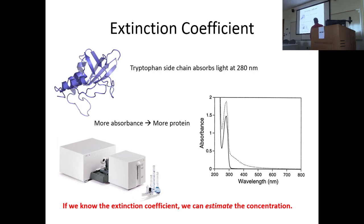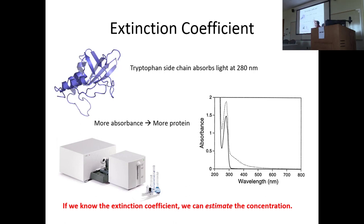Caveat emptor: if you don't have a pure protein, you're not going to get an accurate concentration. Similarly, if you have another large chromophore — like dyes or hemoglobin with its heme signal — and there are other things contributing to absorbance at this peak, that's not going to give you an accurate concentration either. A good UV-Vis spectrum of a fairly pure protein shows nothing else contributing to the peak at 280, and knowing it's a pure sample lets you estimate protein concentration.